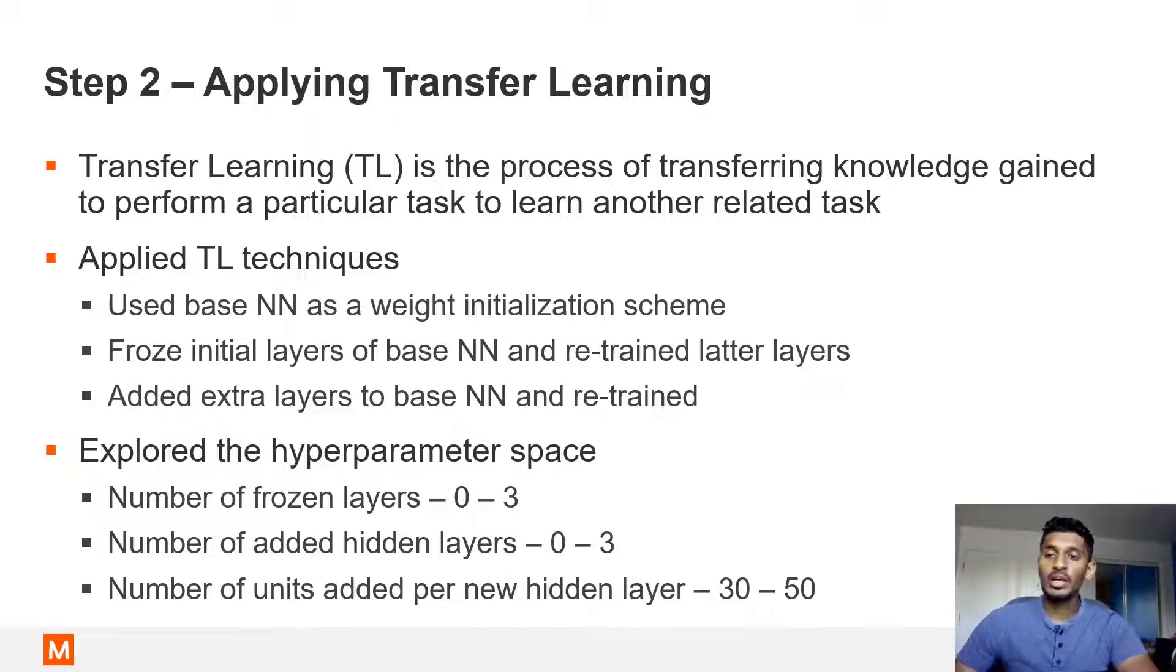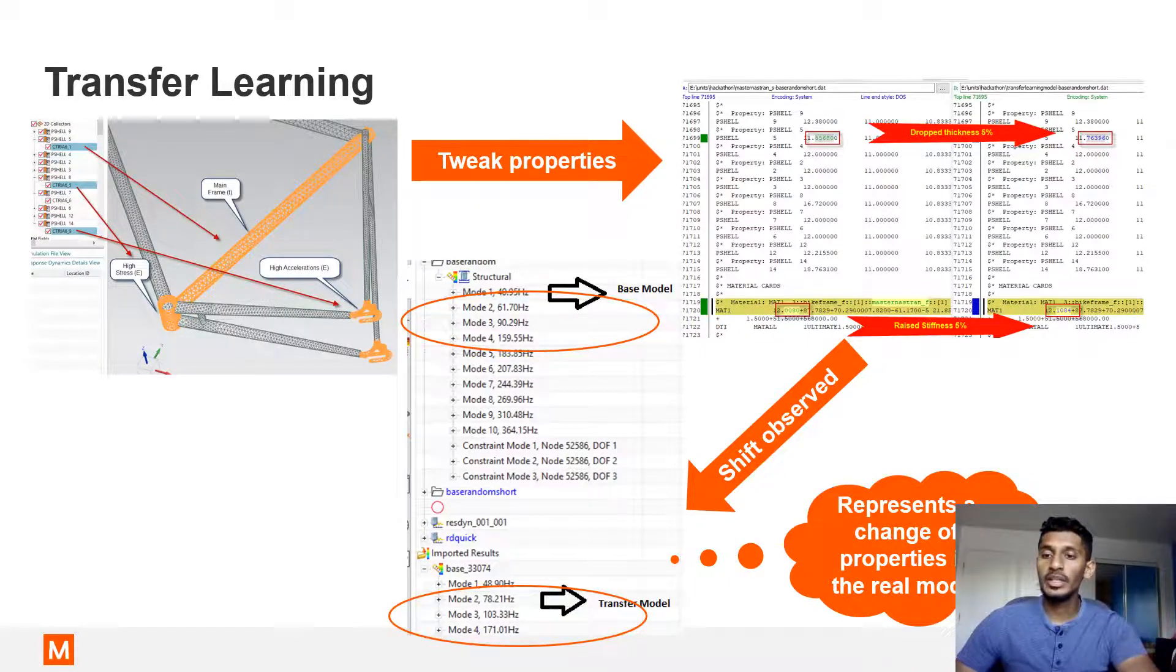Similar to step 1, we explored the hyperparameter space to find the best neural network configuration for the adjusted model. To perform transfer learning, we tweaked the material properties of the base model to produce a second model called the adjusted model. The thickness of certain components of the structure were dropped by 5%, and the stiffnesses were raised by 5%. A shift in modal frequencies were observed as a result, and another 27,000 training examples were generated, but only 1,000 examples were used for the tuning process.